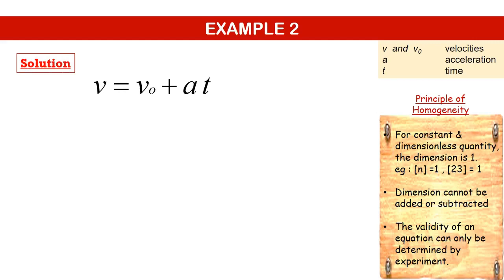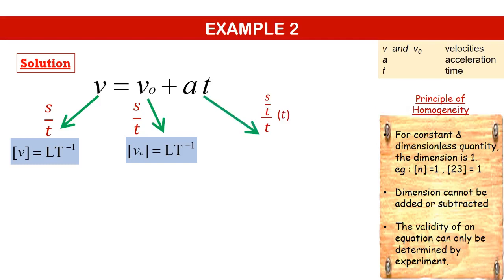The term on the left-hand side is velocity, which is equal to displacement over time. Therefore, its dimension is LT^-1. On the right-hand side, the first term is also velocity. Thus, the dimension is LT^-1. The next term is at. Acceleration equals velocity over time, and velocity is displacement over time. By cancelling time on top and bottom, we end up with the same dimension. Therefore, this equation is homogeneous.